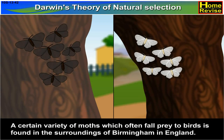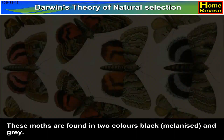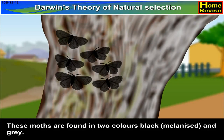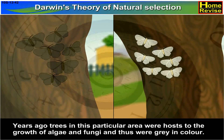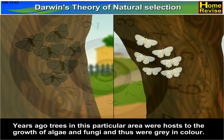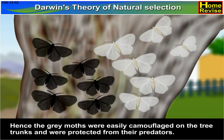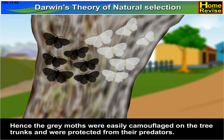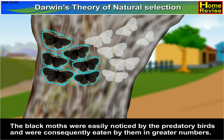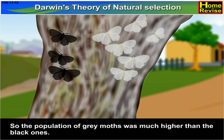A certain variety of moths, which often fall prey to birds, is found in the surroundings of Birmingham in England. These moths are found in two colours: black, i.e., melanised, and grey. Both varieties live on tree trunks. Years ago, trees in this area were host to the growth of algae and fungi and thus were grey in colour. Hence, the grey moths were easily camouflaged on the tree trunks and were protected from their predators. The black moths were easily noticed by birds and were consequently eaten in greater numbers. So the population of grey moths was much higher than the black ones.